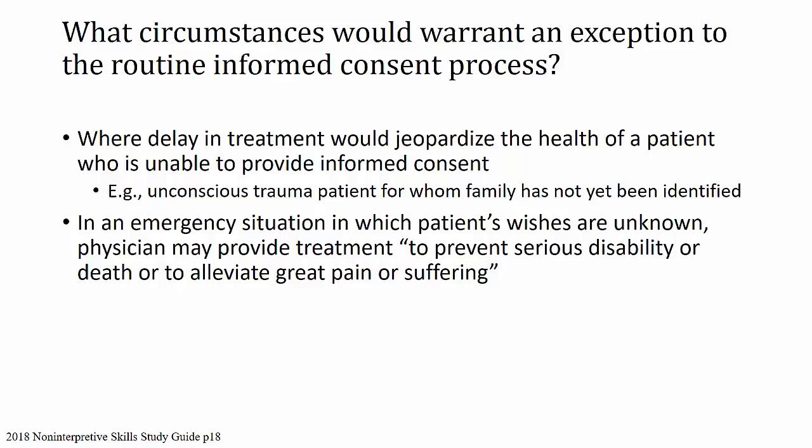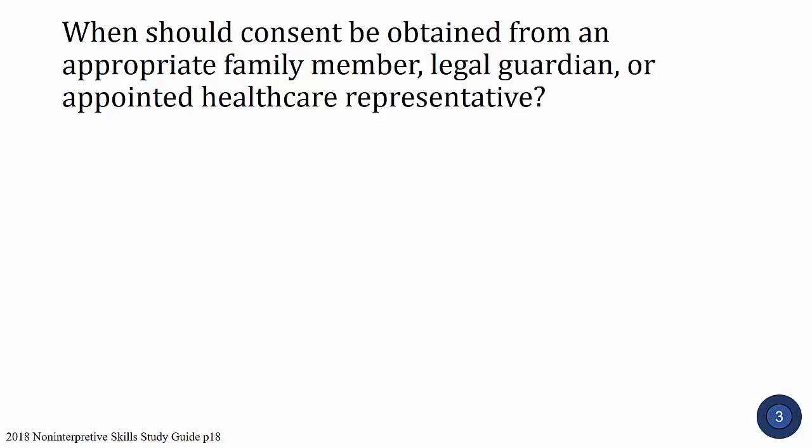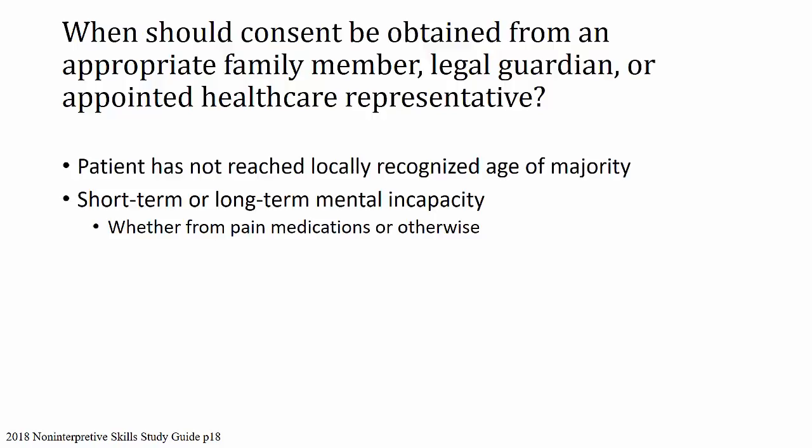Next question: when should consent be obtained from an appropriate family member, legal guardian, or appointed healthcare representative? Consent from someone other than the patient can occur when the patient has not reached the locally recognized age of majority — in other words, when they are considered a child — and when there is short-term or long-term mental incapacity, which may be from pain medications or otherwise. If for some reason the patient is not able to give consent themselves, a proxy can step in.